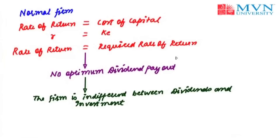Although the Walter model provides a simple framework to explain the relationship between the market value of shares and dividend policy, it has certain unrealistic assumptions. The assumption of no external financing apart from retained earnings is not really followed in the real world. The constant rate of return and cost of capital are seldom found in real life, because as and when a firm invests more, the business risk changes. These are a few criticisms against the Walter approach.